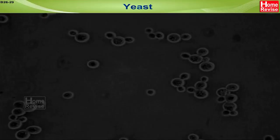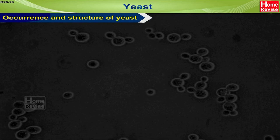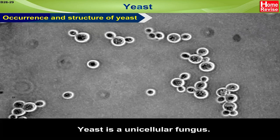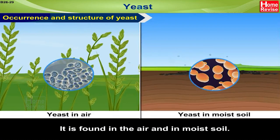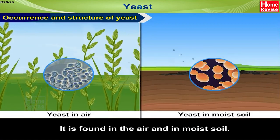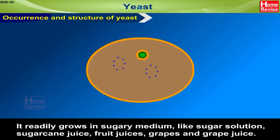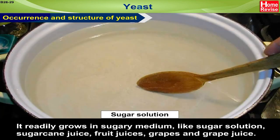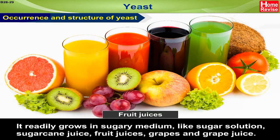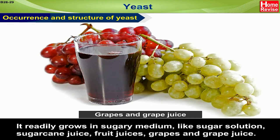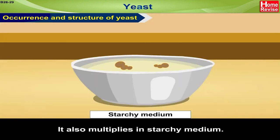Yeast is a unicellular fungus. It is found in the air and in moist soil. It readily grows in sugary medium like sugar solution, sugarcane juice, fruit juices, grapes, and grape juice. It also multiplies in starchy medium.